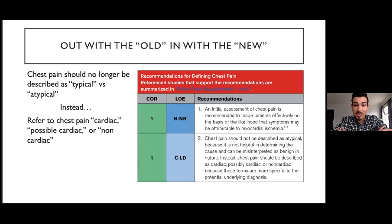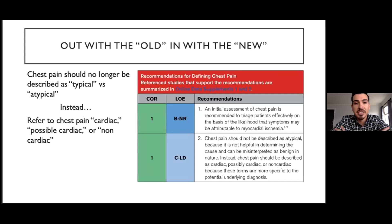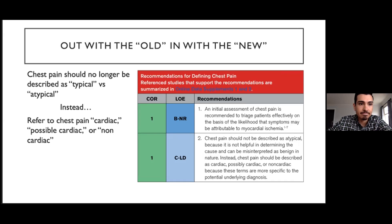First, let's start with some general housekeeping. There have been some changes with regards to the nomenclature and classification of chest pain discussed in these guidelines. What they recommended is that chest pain should no longer be described as typical versus atypical. Instead, we should refer to chest pain as cardiac, possible cardiac, or non-cardiac. The reason is that 'atypical' can often be misinterpreted to mean some type of benign cause — which is certainly not true, because a pneumothorax or a PE, although it can present with atypical chest pain, is quite serious.